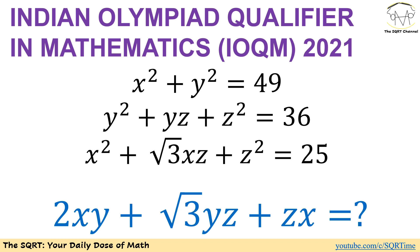Hello everyone, welcome to the SQRT channel. In this video we are going to talk about another problem from the Indian Olympiad Qualifier in Mathematics, or IOQM, from 2021. This is a really interesting problem — we have three expressions and we need to evaluate another expression that we are given.